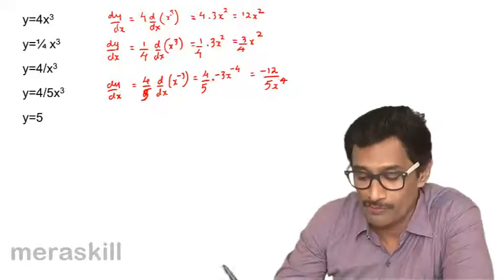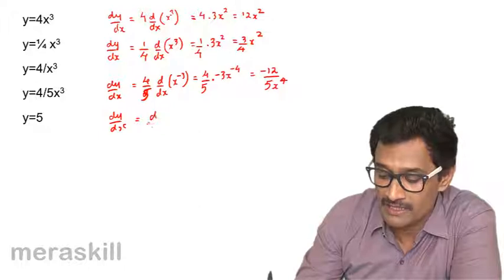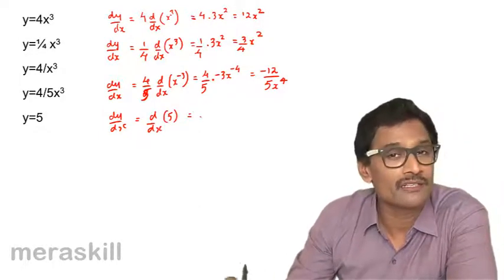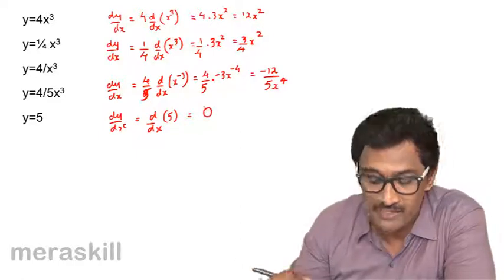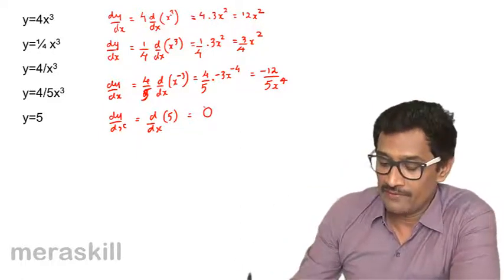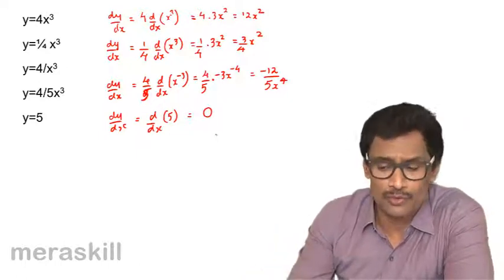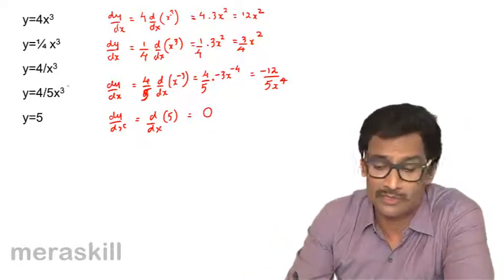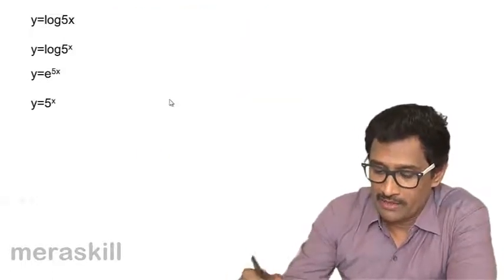Here, dy/dx is d/dx of 5, which is a constant, so the derivative is zero. This is a simple application of the first rule — in fact the most common rule — which should be on your fingertips.